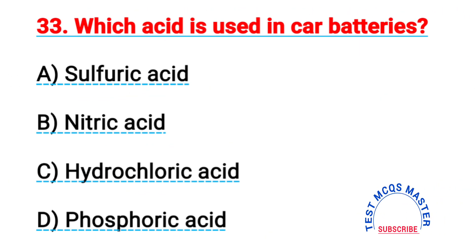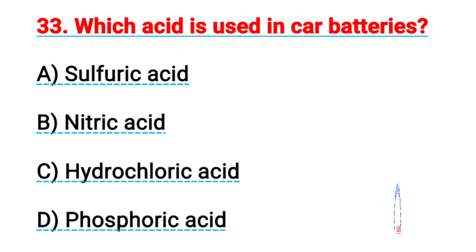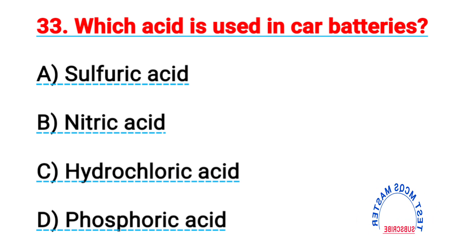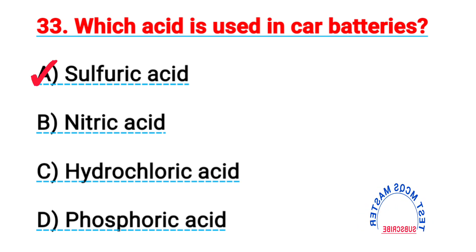Question number thirty-three: which acid is used in car batteries? The right answer is A, sulfuric acid.